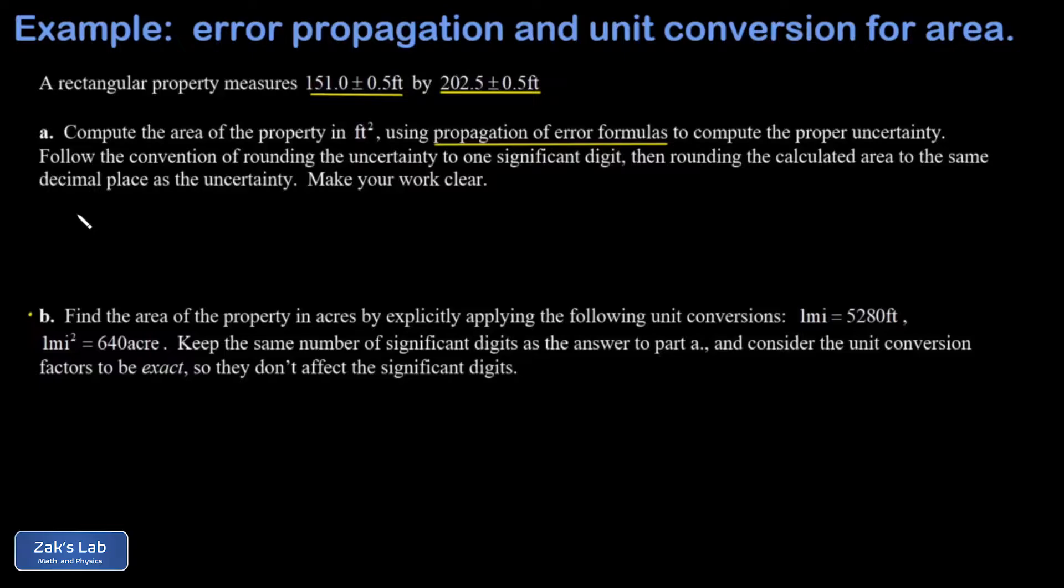So to start things out, I'm going to get the area of this rectangular property. And all I have to do is multiply the two dimensions, length and width. It doesn't matter what order I do those in. So I have 151 feet times 202.5 feet. And when I run the numbers on this, I get to many significant digits, for now, 30,578 square feet.